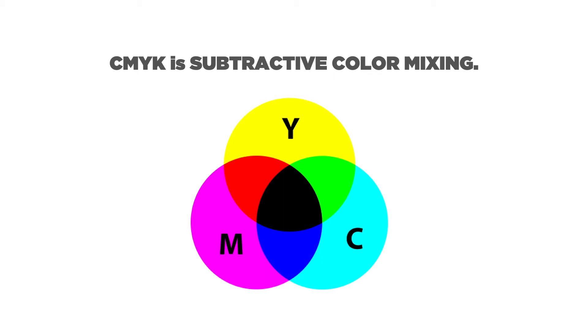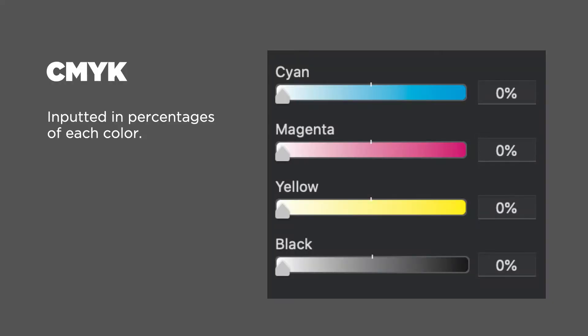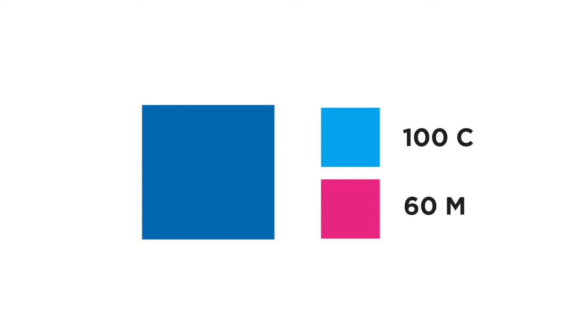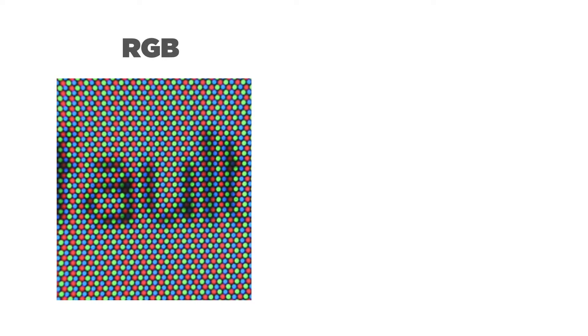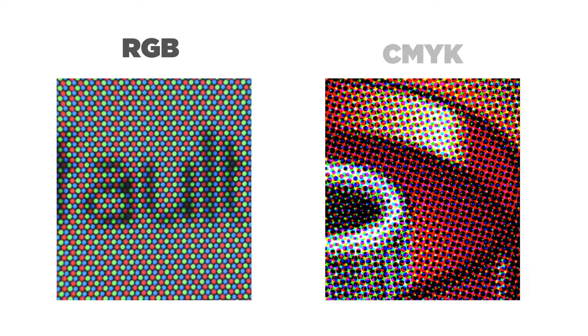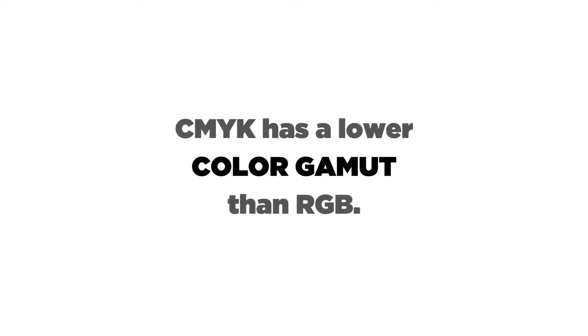CMYK, on the other hand, is about pigments or inks, and this makes CMYK subtractive color mixing, which means that as you add colors — cyan, magenta, yellow, and black — the mixture becomes darker, moving towards a richer, darker black. The mixture of these colors is represented in percentages. For example, this specific shade of blue is a mixture of 100% cyan and 60% magenta, and this yellow is a combination of 10% magenta and 100% yellow. So once again, RGB is about light on a screen and CMYK is about inks on printed paper.